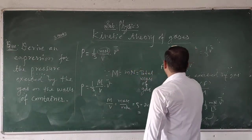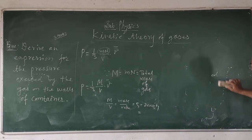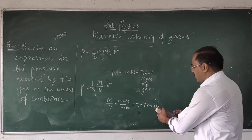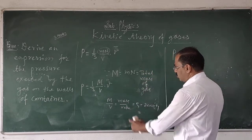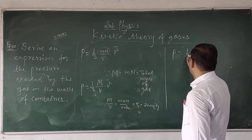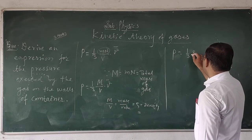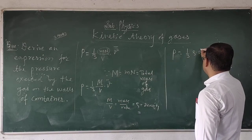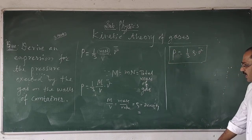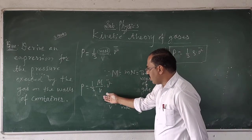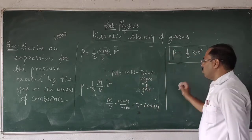In the next line, the expression for the pressure becomes: P is equal to one-third, M by V equals rho, into V squared mean. This is the expression for pressure in terms of mass upon volume, or in terms of rho, that is the density.